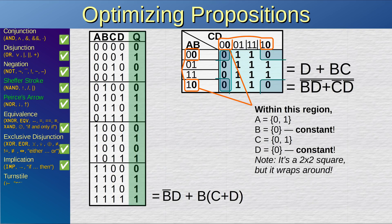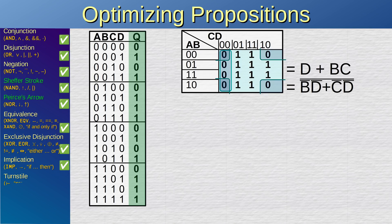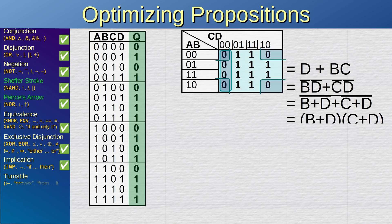If we apply De Morgan's laws on this expression, we get two useful outcomes. The first is a form built entirely using NOR-gates — just three NOR-gates, which is very optimal. Applying De Morgan's laws again, we get the conjunctive normal form, where the phrase is a conjunctive expression of disjunctions.